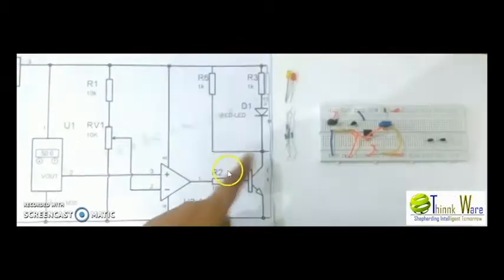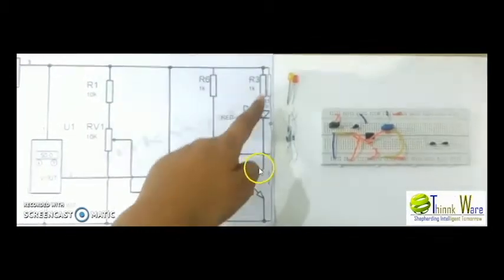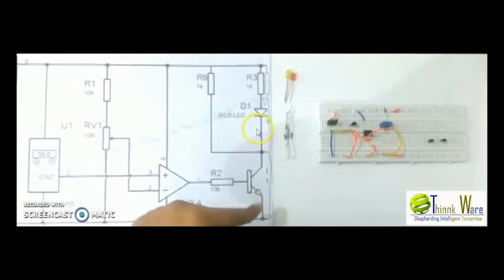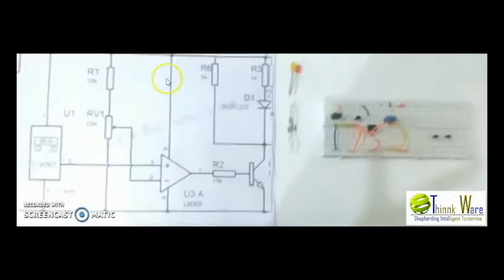After making all those connections, pin 1 is connected through a resistor to the base of the VC547 transistor whose collector is connected through a diode and resistor to the positive terminal of the battery.